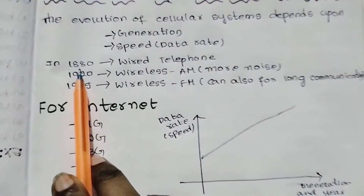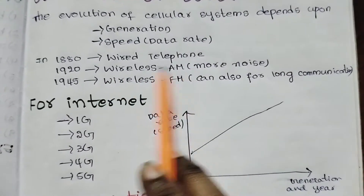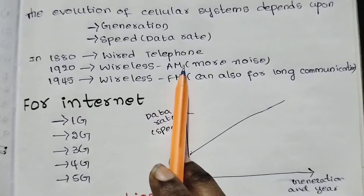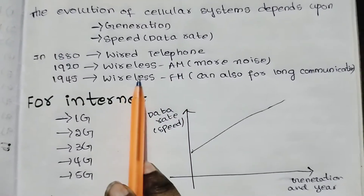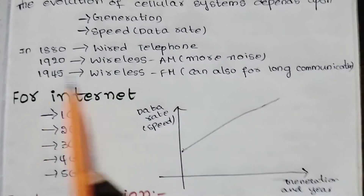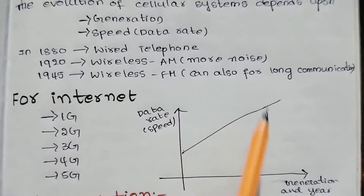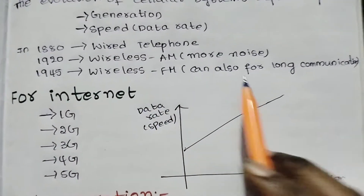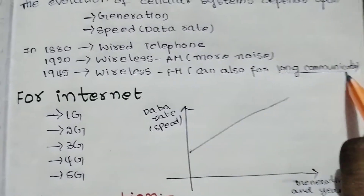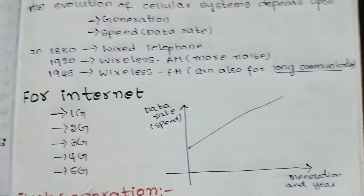In the 1880s, there were wired telephones. In the 1920s, we had wireless AM — amplitude modulation — for wireless communication, but it had more noise. After that, in 1945, frequency modulation was used to communicate over long distances. FM was also used.